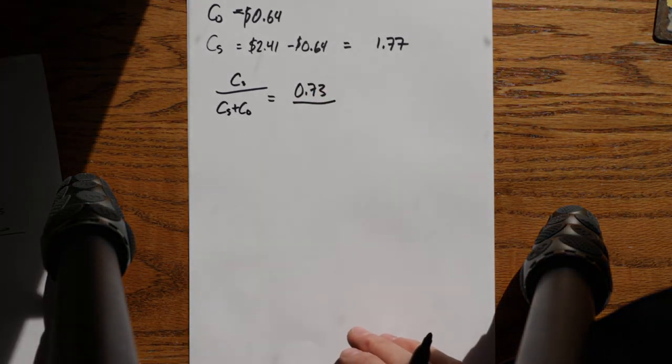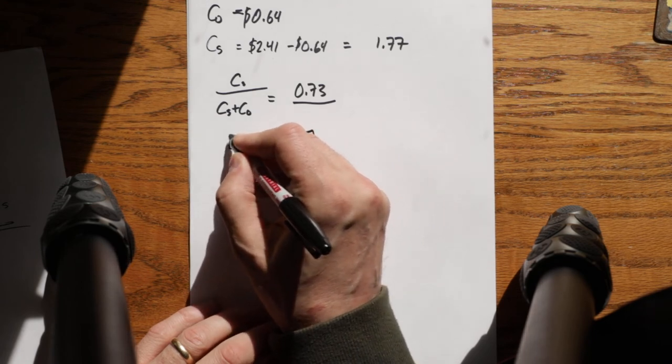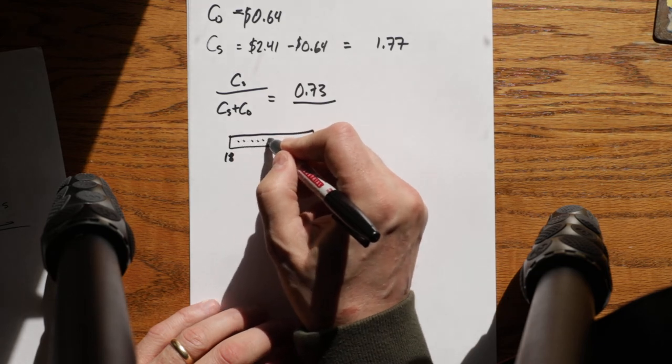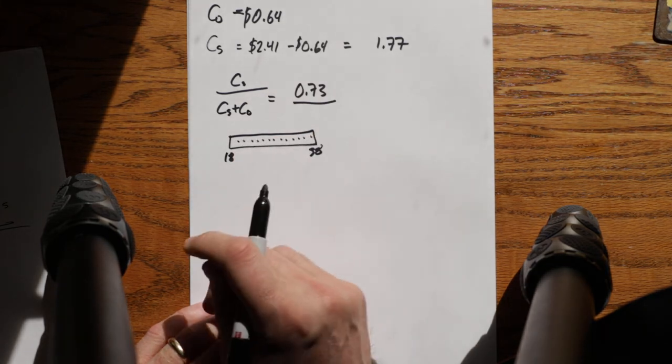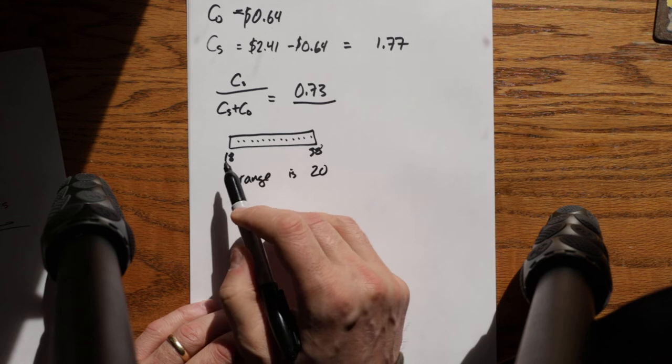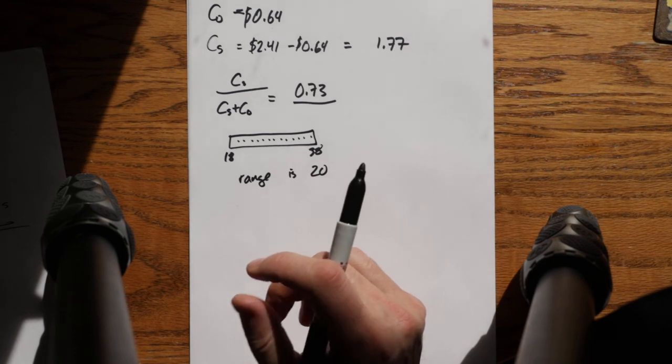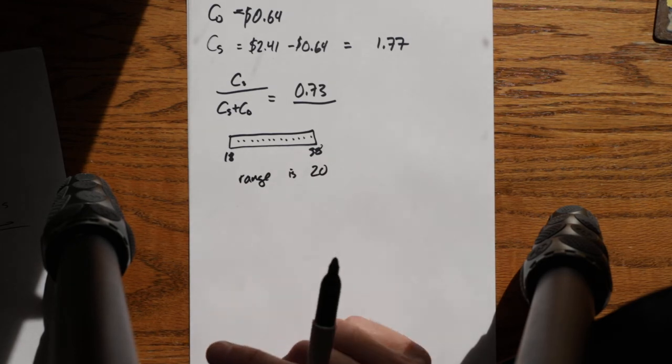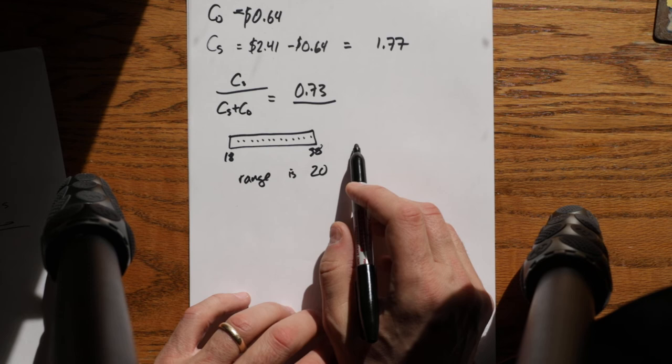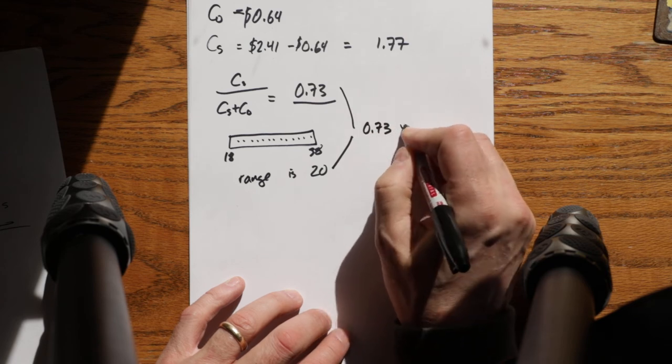If you then look at, we know that demand is uniformly distributed between 18 and 38, that means each one of these spots in there is equally probable to happen. So the range is 20. From the bottom to the top is 20. In this case, the range is from 18 to 38. Then we take the range and multiply it by the critical fractile.